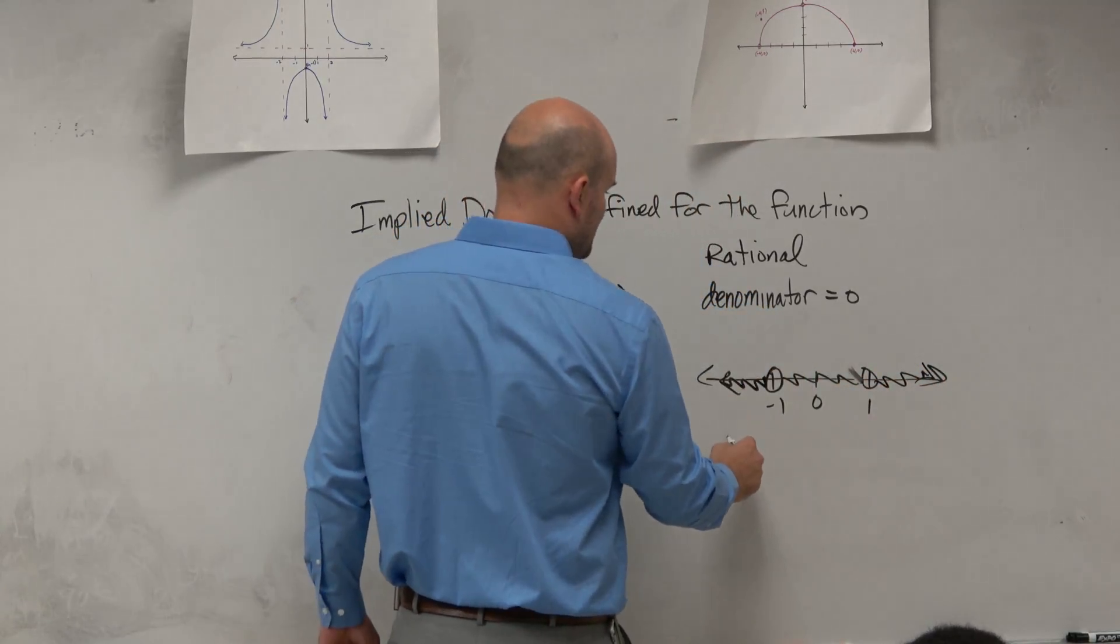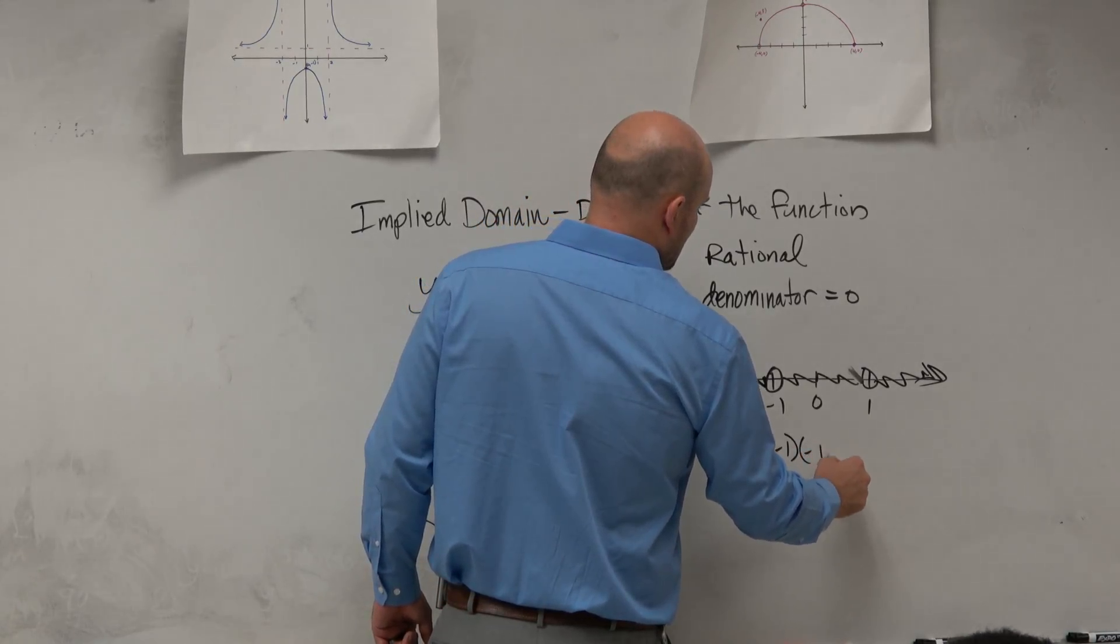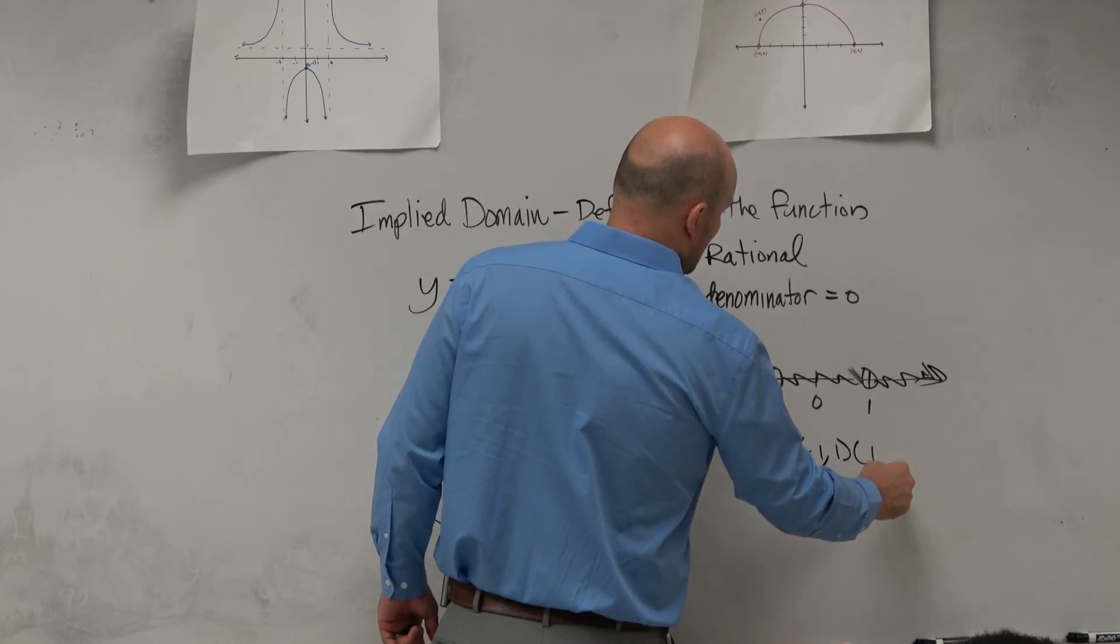So if I wanted to identify the domain here, I'd say negative infinity to negative 1, union negative 1 to 1, union 1 to infinity.